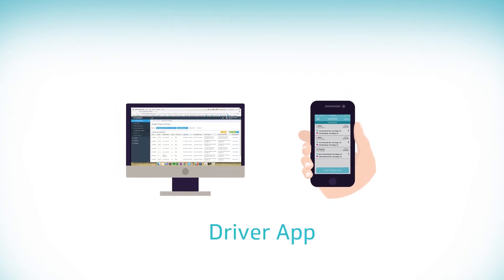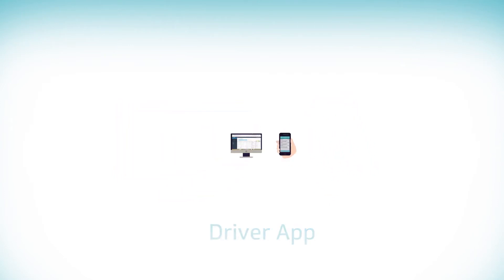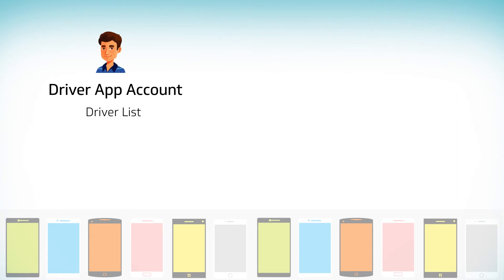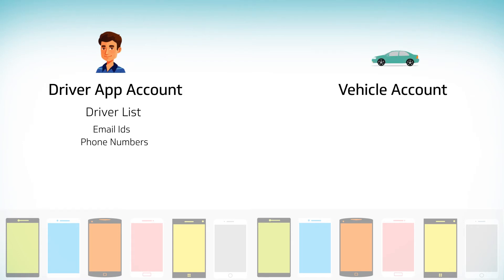Now we will move on to using the Driver app. VAO requires several documents and pieces of information to create app accounts for each driver. The documents include a list of drivers for each provider company with individual emails and phone numbers, a list of the company's vehicles, and copies of the vehicle registration, insurance, and inspection forms.